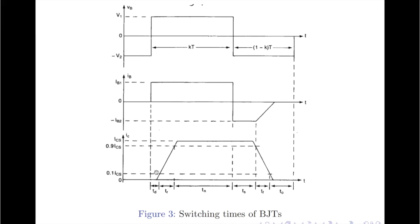Coming back to the switching time waveforms, the collector current does not change for a duration of ts when the base voltage is reversed from V1 to −V2. This is the time during which the base current also changes from Ib1 to −Ib2. This duration ts is required to remove the saturating charge stored in the base region. The reversal of the base voltage Vb and hence the base current Ib accelerates the discharging of the saturating charge. If the base current was not reversed, the time taken to remove the saturating charge would be considerably higher.